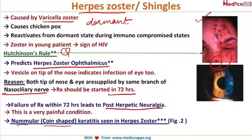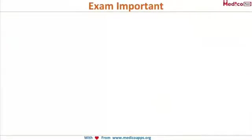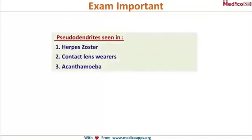Another form is nummular keratitis — 'nummular' meaning coin-shaped. Look at this picture showing all these coin-shaped opacities characteristic of nummular keratitis seen in herpes zoster. Here you will also see pseudodendrites. For a quick revision: pseudodendrites are seen in three conditions — herpes zoster, contact lens wearers, and acanthamoeba.